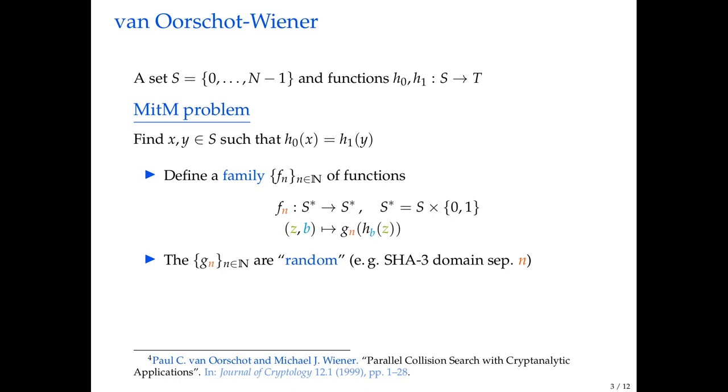The way we do this is we define several functions. We define a family of functions which do the following. They take an input as an input, first of all, an element of the set S, Z here, but also a bit B. What it now does is it takes an element Z and it evaluates the function h0 or h1 determined by the bit B. It looks at the bit B. If it's zero, it evaluates h0 at Z. If it's one, it evaluates h1 at Z. Then to the output, it applies a g of n, where g of n is just some random function indexed by n. For example, it could be SHA-3 or SHA-256 or some other hash function which has a random behavior. To generate a family of those, we can just domain separate them by this index n. Now we get a family of functions indexed by n, and each of these functions has a golden collision, meaning that it's a collision of the function f, f of n. If we find that collision, it leads back to a solution of the meet in the middle problem.